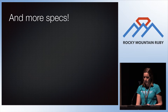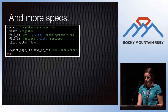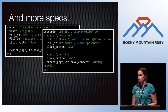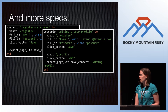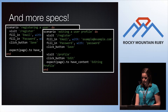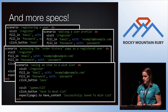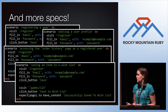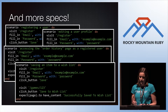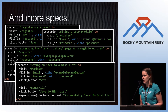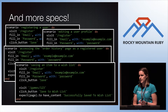And then you keep adding more specs. There's our registering a user spec — visit, fill_in email, fill_in password, save. Editing a user profile — visit, fill_in email, fill_in password, save. Accessing the order history page — you need a registered user, so visit, fill_in email, fill_in password, save. Saving items to a wish list — but we need a registered user, so visit, fill_in email, fill_in password, save. This may look obviously bad when you put it all together like this.